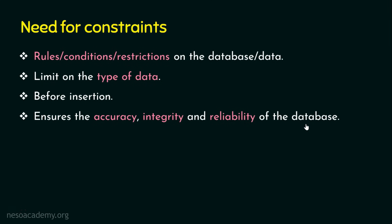In case the conditions are not satisfied, then it is a violation. When a violation is found, that particular action is aborted. For example, let's assume there is a column in the table called gender, and we are permitting only three categories: male, female, or transgender. In case there is an update or insert operation executed for a value other than male, female, or transgender, then that is called a violation and that particular insert operation is aborted, because we have set a constraint that it should accept only male, female, or transgender for that column.